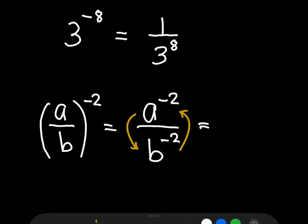So you change the position. So b square will go up, so that is b square, over a negative 2 will go down, so that is a square, and that is the simplified form.